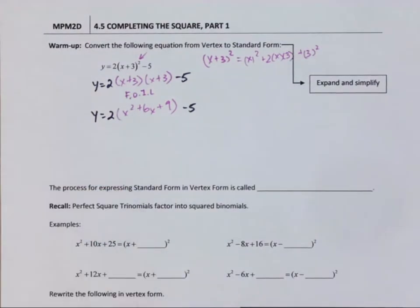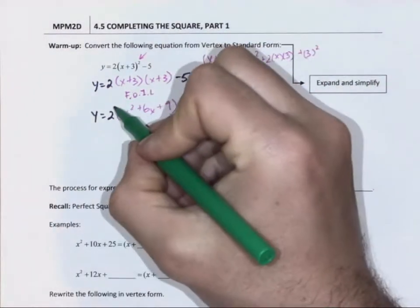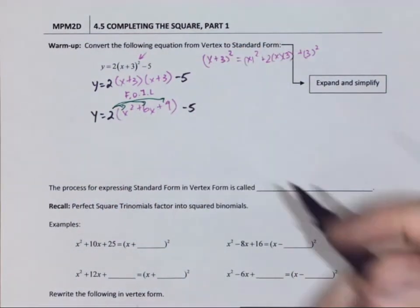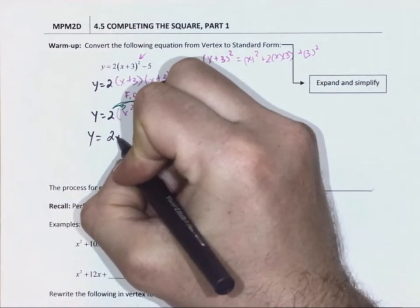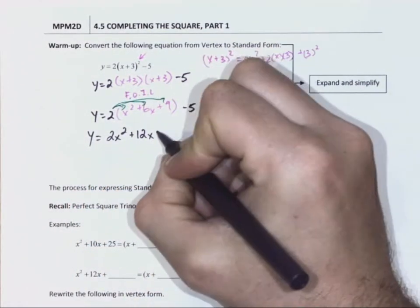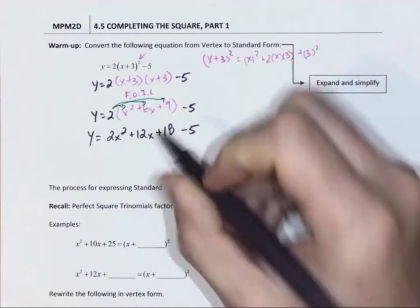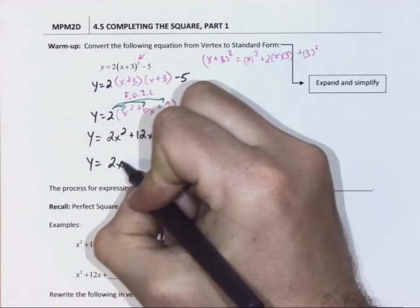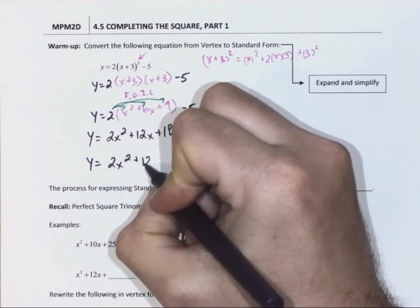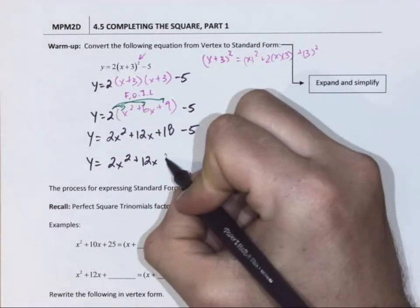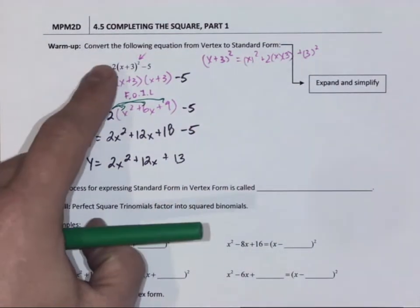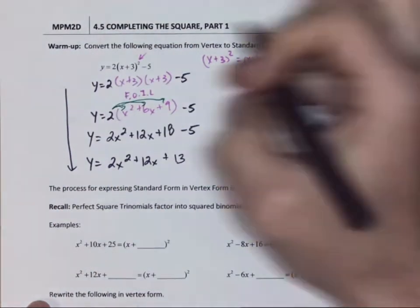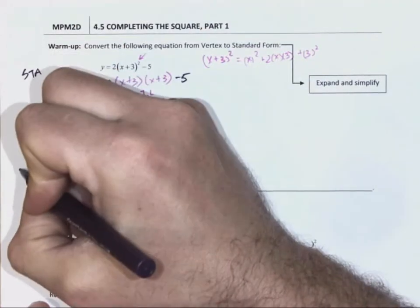And then distribute that a term into the brackets. And then really, the last step would be to collect like terms. So we've gone from vertex form to standard form by expand and simplify. So from vertex to standard.